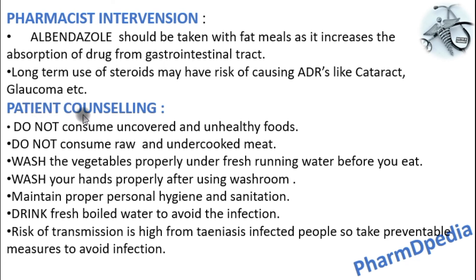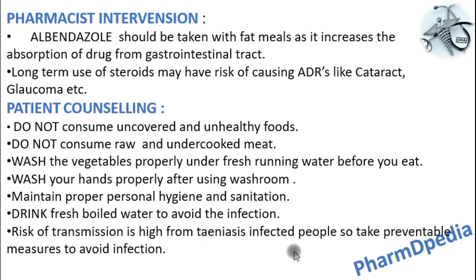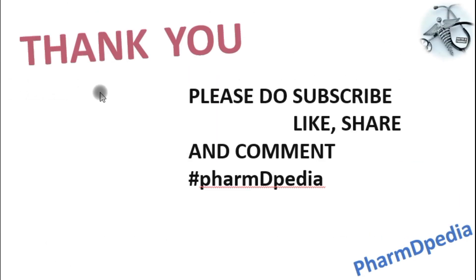Patient counselling: Simple preventive measures include not consuming uncovered or unhealthy foods, avoiding raw and undercooked meat, washing hands properly after using the washroom, maintaining proper personal hygiene and sanitation, and drinking fresh boiled water. There is a risk of transmission from Taenia solium-infected individuals, so preventive measures should be taken to avoid infection.